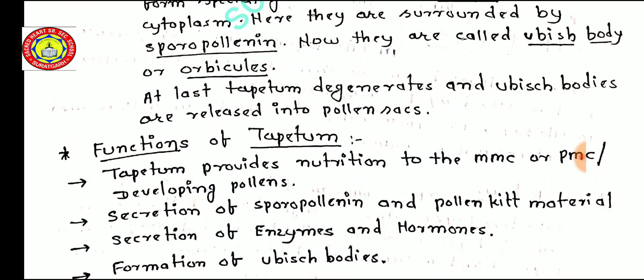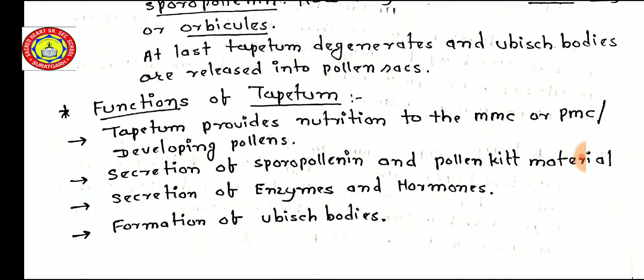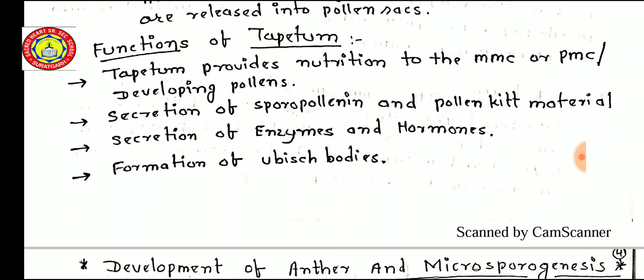The functions of the tapetum include: providing nutrition to the microspore mother cell (MMC) or pollen mother cell (PMC) and developing pollen grains; secretion of sporopollenin and pollen kit material; secretion of enzymes and hormones; and formation of ubish bodies.